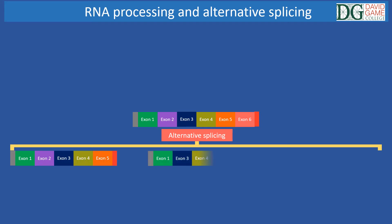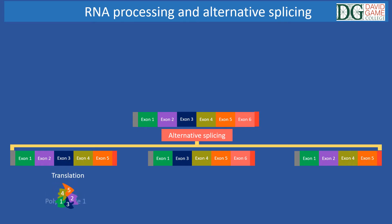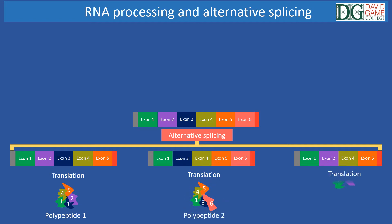Alternative splicing is a form of RNA splicing that helps generate different forms of messenger RNA from identical pre-messenger RNA molecules. This allows the expression of many different polypeptides from one gene, and these polypeptides can have different functions and activities. A good example is the production of antibodies.